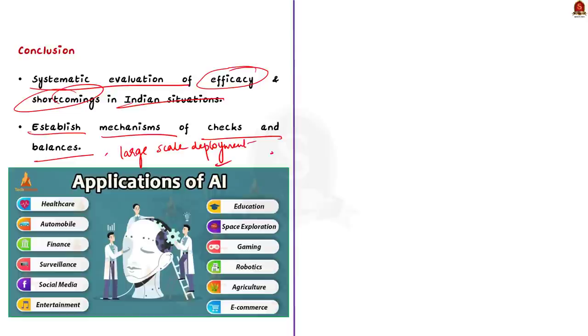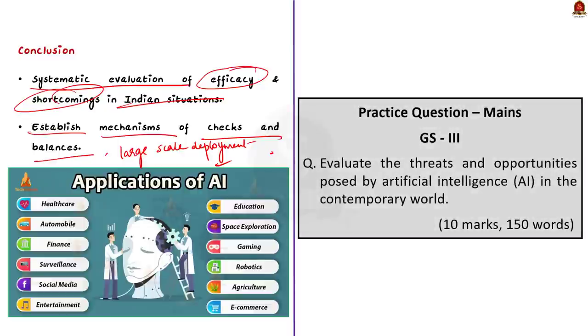In conclusion, we need to be careful with AI as it can be used for both good and bad purposes. It is important to use AI responsibly and think about the potential risks it poses. With these points in mind, now we will move on to the next article discussion.